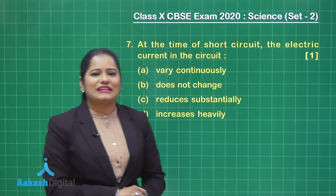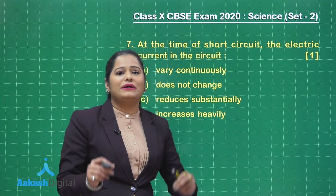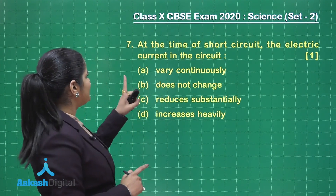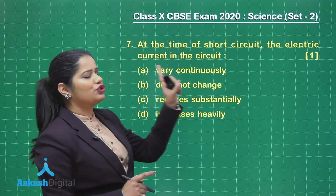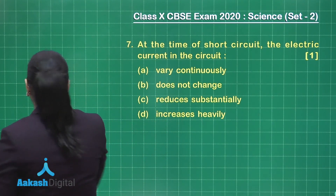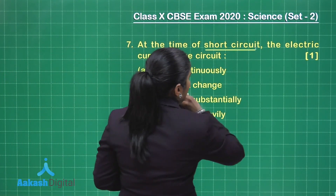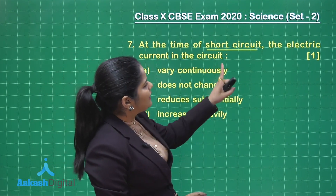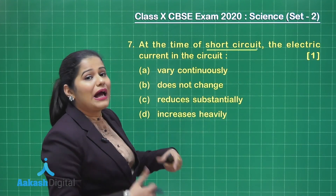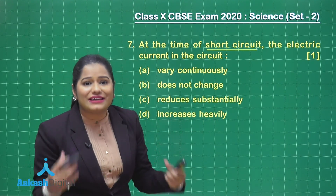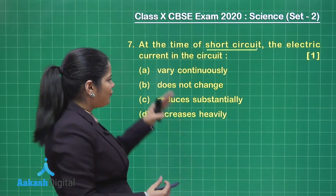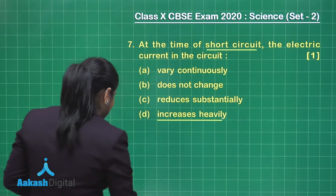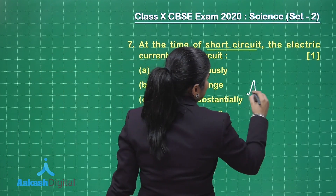Hey, so now here I have question number 7, and question number 7 had a choice given in the paper. This is the first choice of question 7. It says at the time of short circuit — make sure you have read the questions carefully in the exam. So at the time of short circuit, the electric current in the circuit increases heavily. If you have a closer look at the options, you can clearly see that option D is the correct answer to this question.